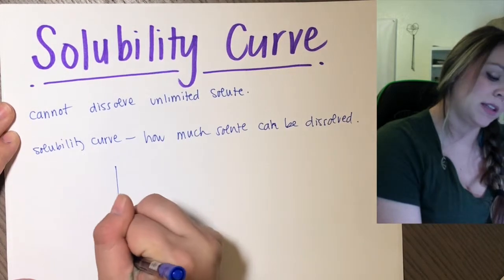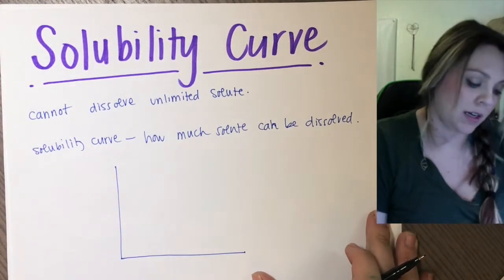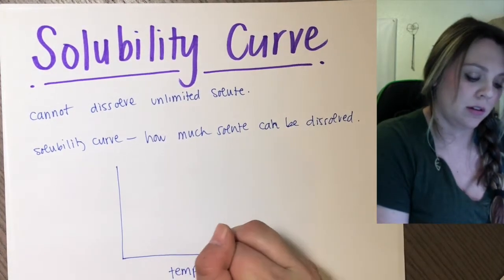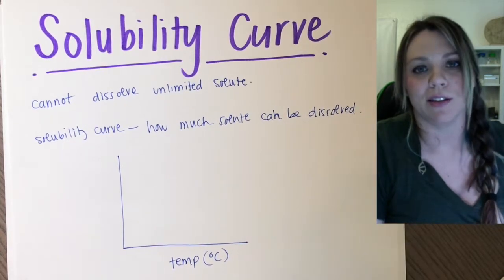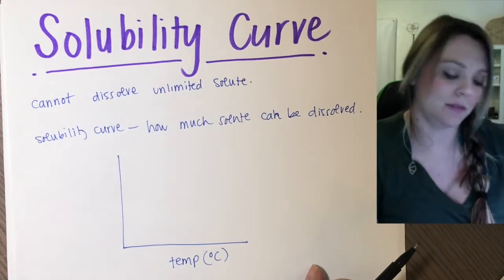It's a really easy graph. On my x-axis, I have temperature in degrees Celsius, because Fahrenheit is garbage in chemistry and science. We don't use Fahrenheit. Get used to it - Celsius.